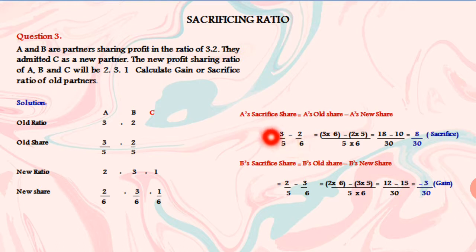Minus means cross multiply. 3 into 6 minus 2 into 5 divided by 5 into 6. 3 times 6 is 18 minus 5 times 2 is 10 divided by 5 into 6 is 30. Then 18 minus 10 is 8 by 30. A's sacrifice is 8 by 30.